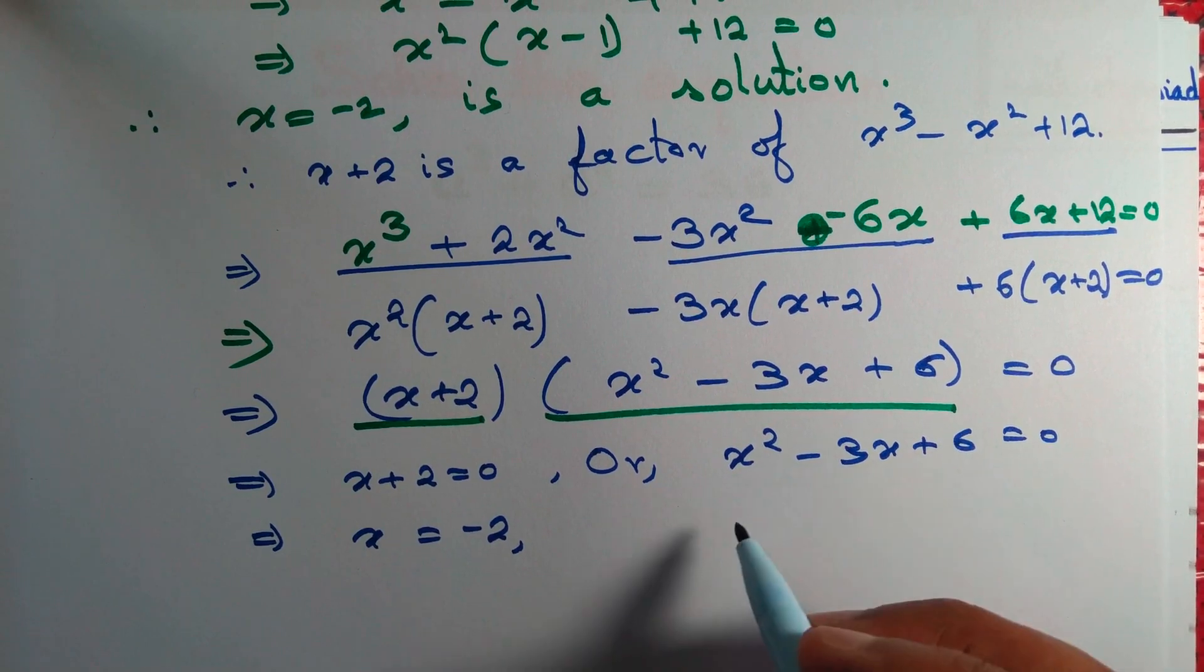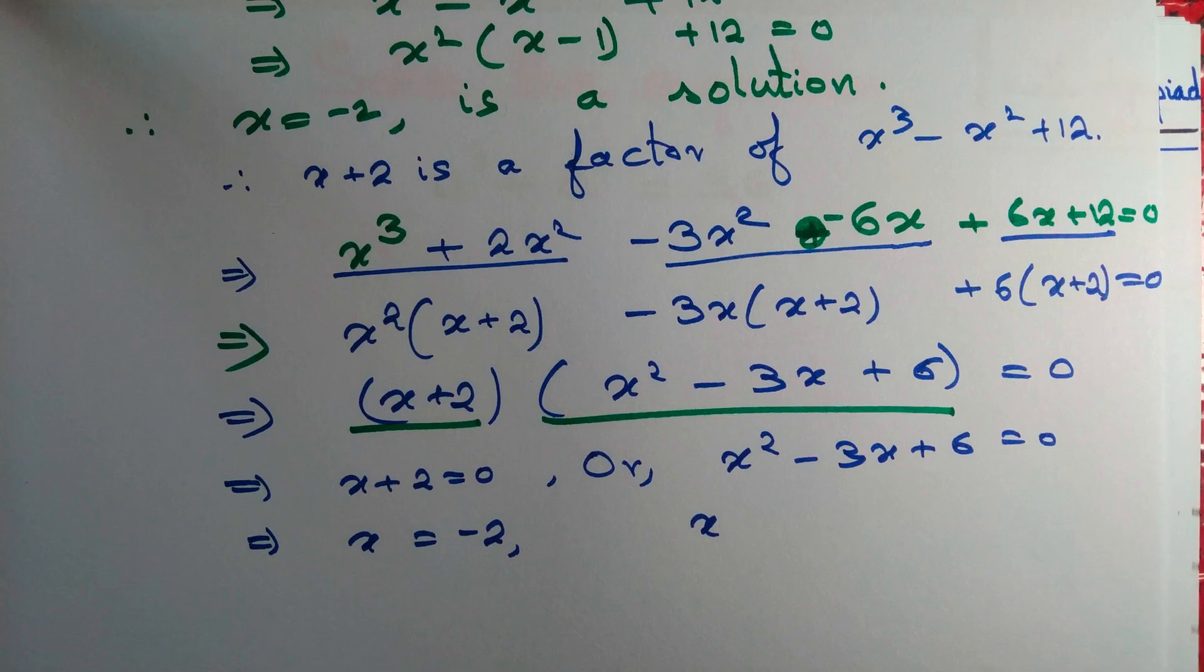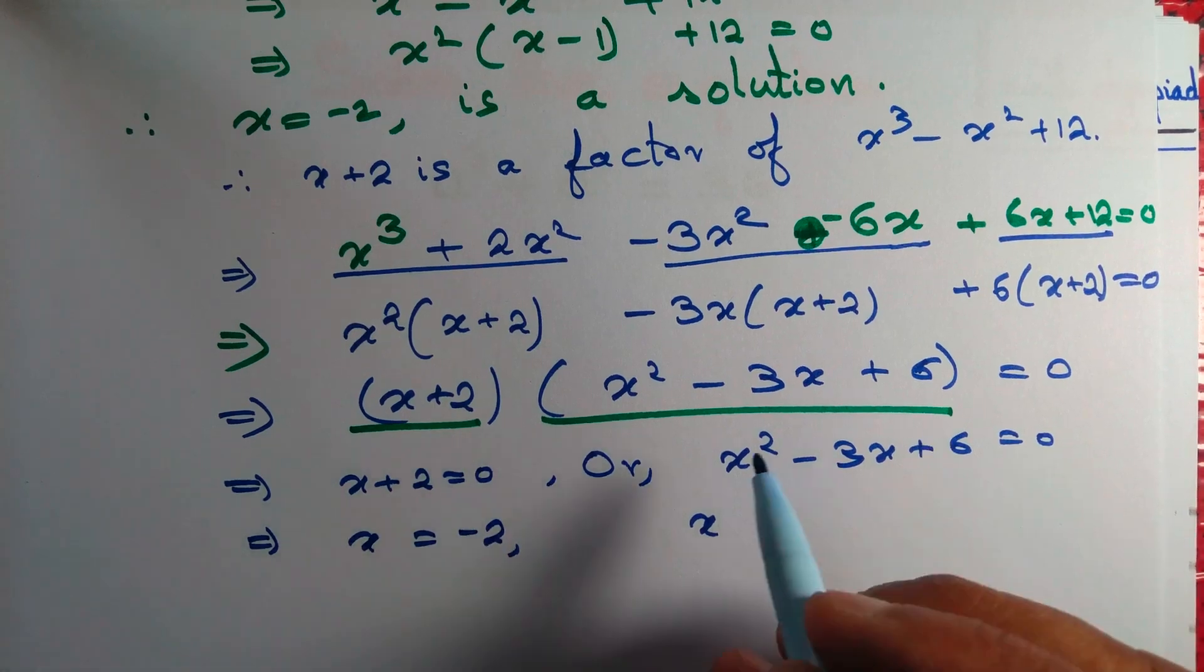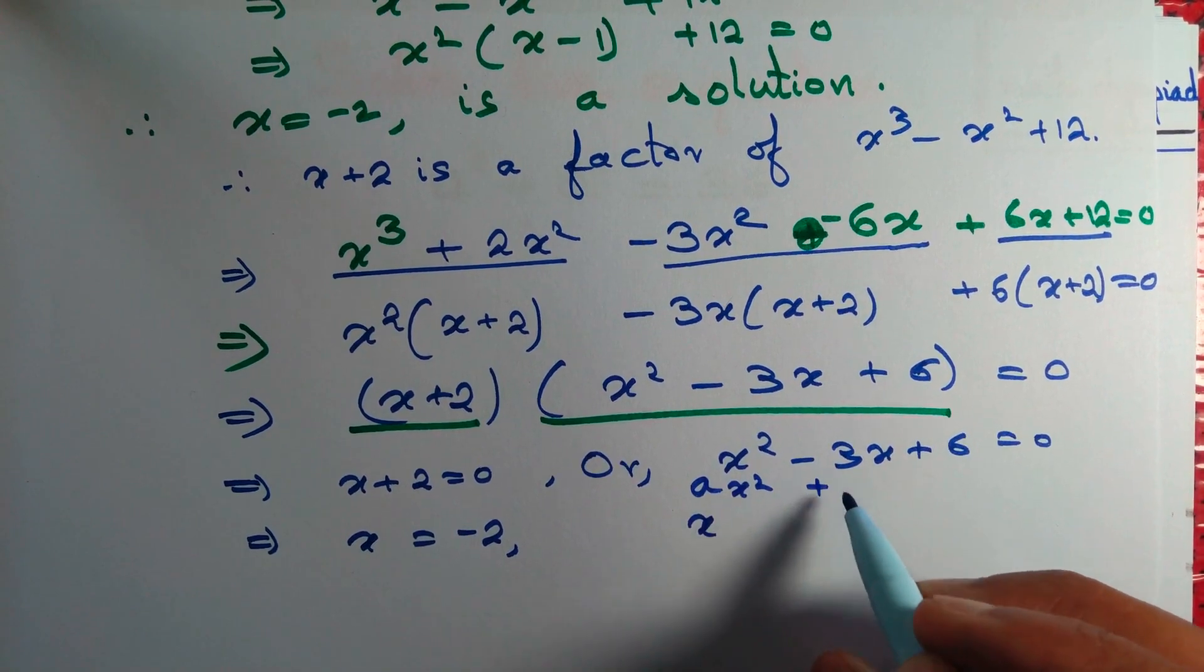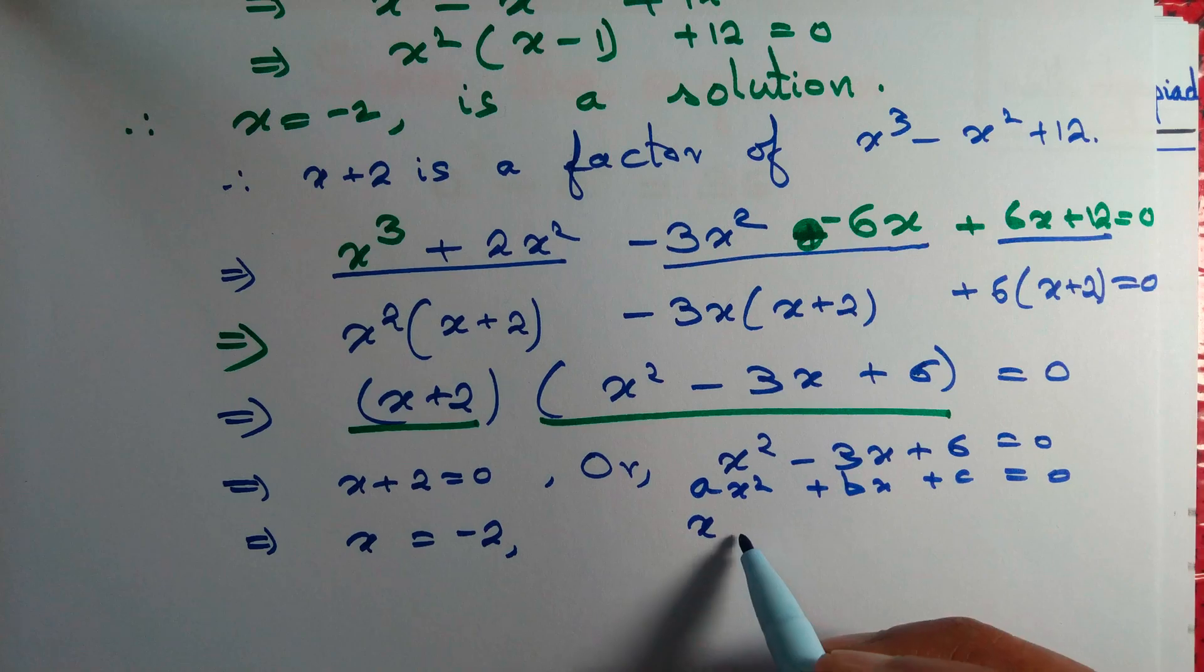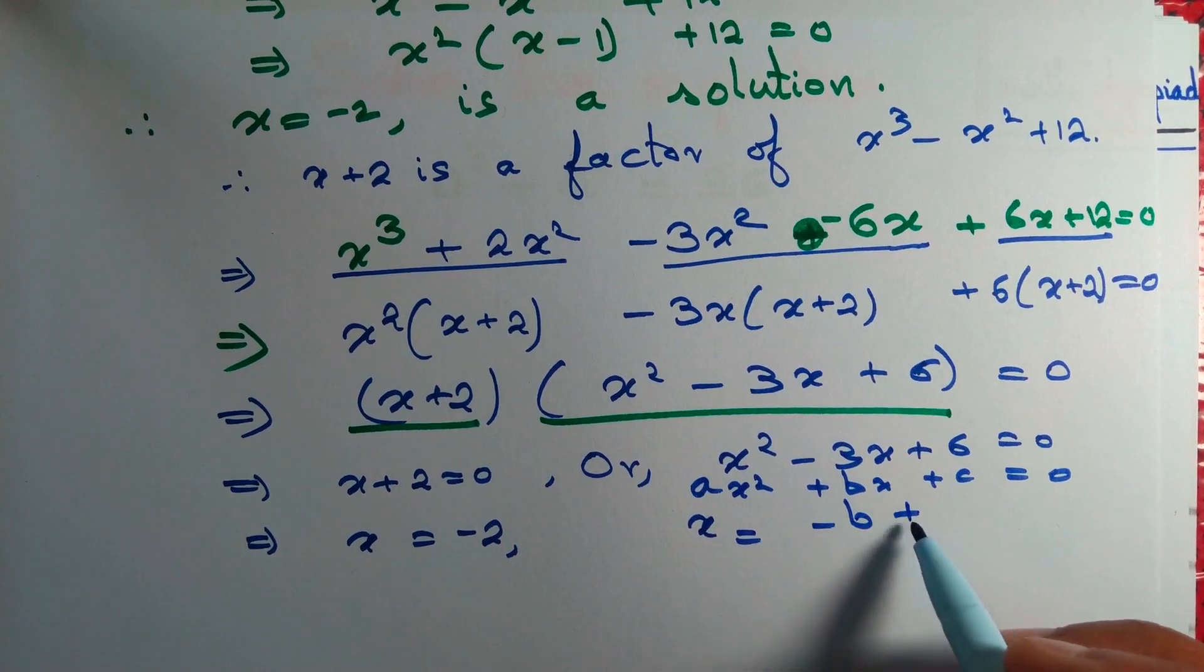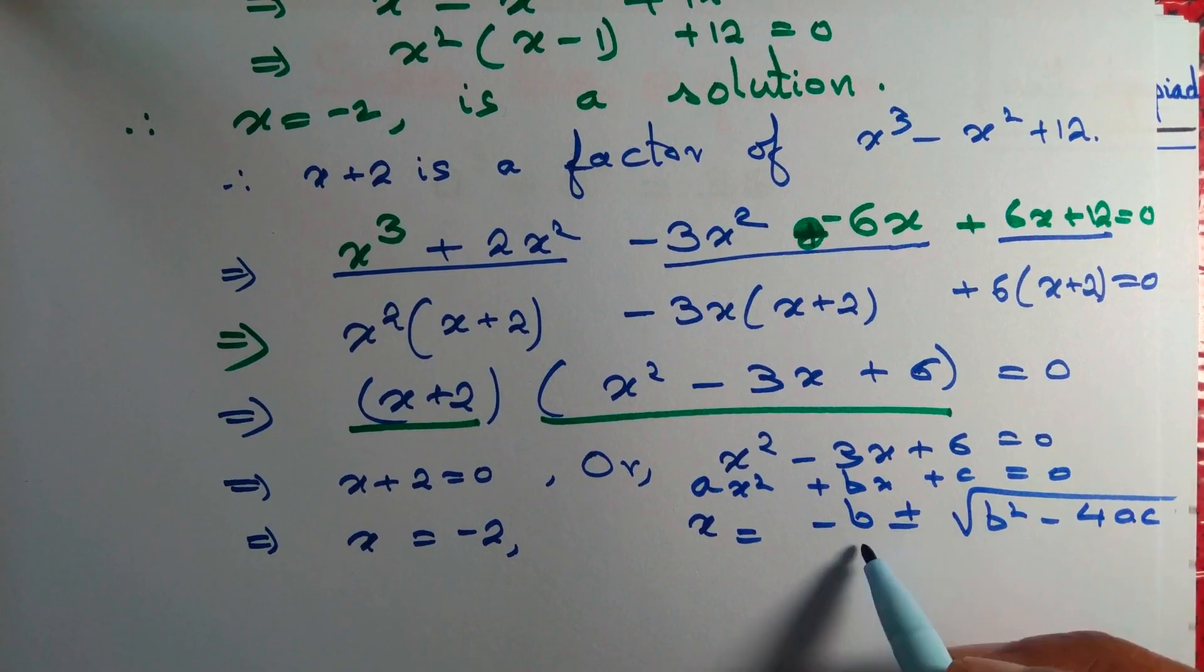This is a quadratic equation. Roots are given by, let's compare it with the expression, ax square plus bx plus c equals 0. Then roots are given by x equals minus b plus minus root over b square minus 4ac by 2a.